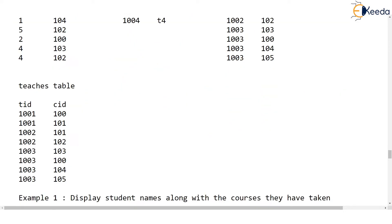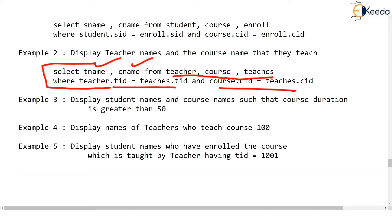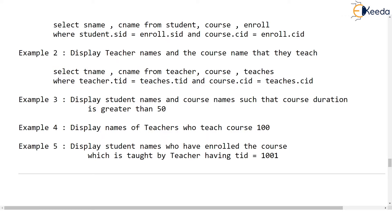That's the answer for example two — select teacher name and course name from these three tables with those join conditions. Now let's see example three. You should get this quickly now. The question is: display student name and course name such that course duration is greater than 50. What will be the SELECT query?